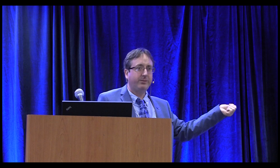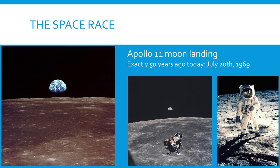Another well-known example is John Tyndall, an Irishman, who showed that oxygen and nitrogen are almost transparent to infrared light, but that water vapor, CO2, and methane are infrared active — meaning they can absorb and emit at particular frequencies of IR. Around 50 years ago the Eagle was landing on the Moon, which was in many senses the culmination of the space race.